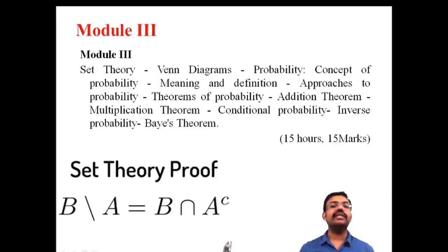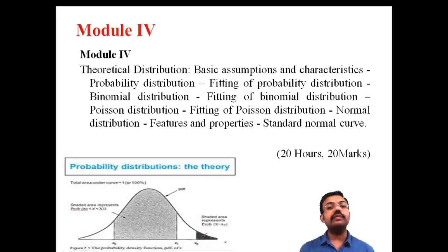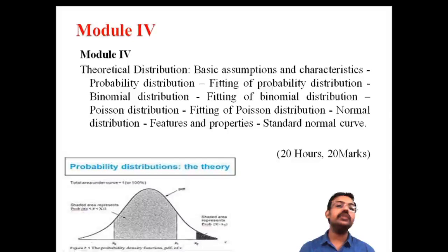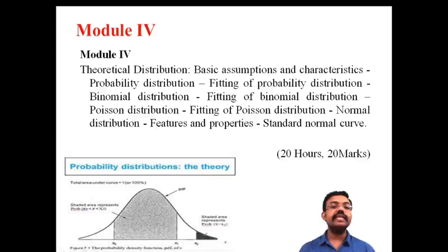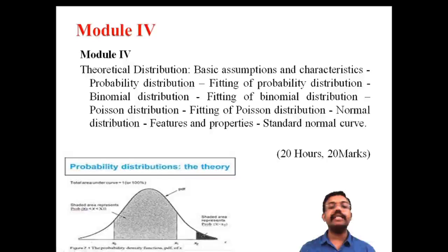The fourth module covers Theoretical Probability Distributions. We discuss the binomial distribution, Poisson distribution, and normal distribution, including the standard normal curve. These are the basic contents of the fourth module. It has 20 hours allocated and carries 20 marks.